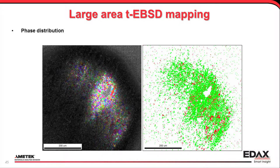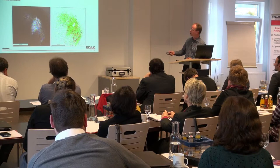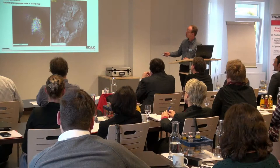Here's the phase distribution. This is a two-phase material — TiAl3 and AlTi3, so there are mixed phases. We can look at that and know where we want to go to find those phases. And there's the IQ map. In here you can see some grains that don't seem to produce any patterns — they're just dark.